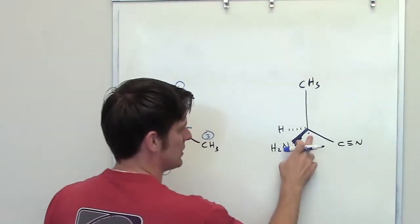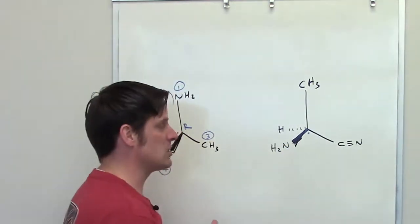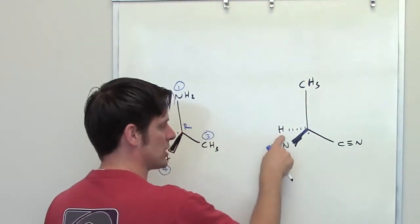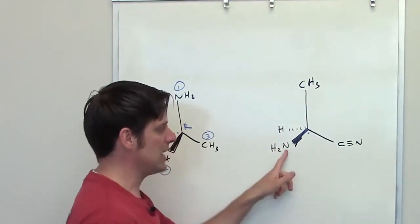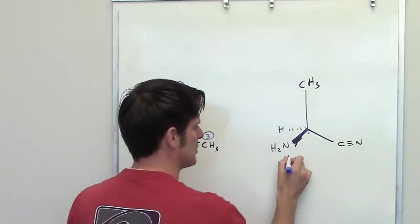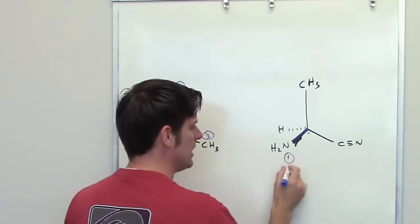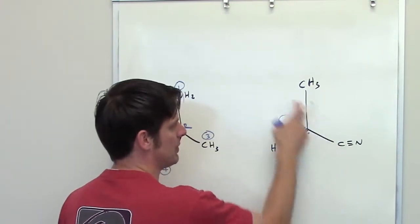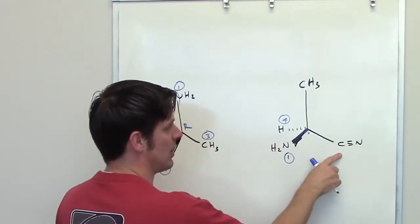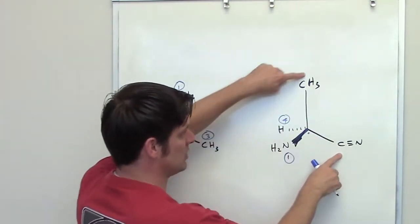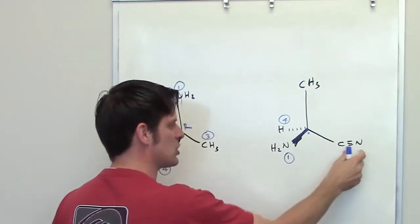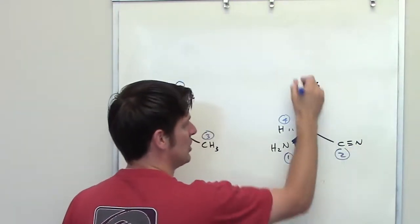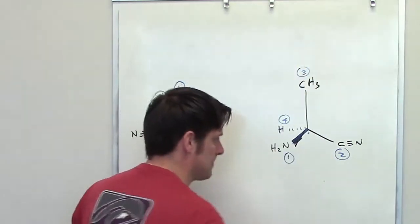I look at this stereocenter and go out to each of the four groups bound to it: a carbon, a carbon, a nitrogen, and a hydrogen. Nitrogen has the highest atomic number, so it's priority group number one. Hydrogen is the lowest — priority group number four. Carbon and carbon tie, so I go out to break the tie. This one goes to hydrogen; this one goes to nitrogen. Nitrogen breaks the tie, which means this is priority group number two, and this is priority group number three.